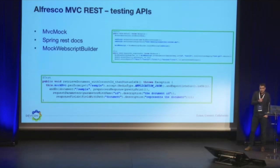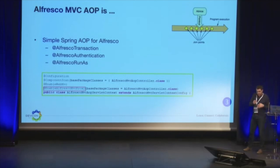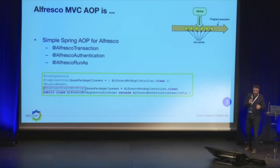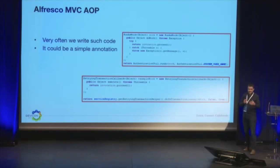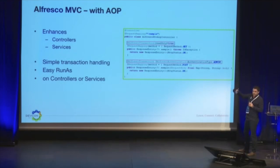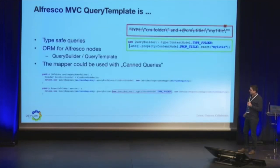Regarding testing: since we use Spring MVC and controllers, we can use MVC mock and also Spring REST docs to create documentation — it's quite easy. The next part is a helper: a simple annotation to create transactions, authentication, and run-as. That's something everybody does almost every day. When we need to write a run-as, we need to create a lot of boilerplate, while it could just be a simple annotation. You can use this part — the AOP module — independently on services or on controllers.